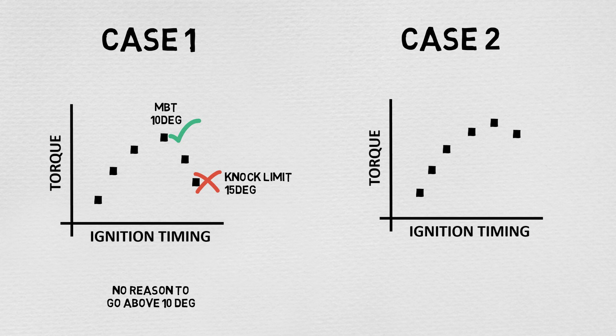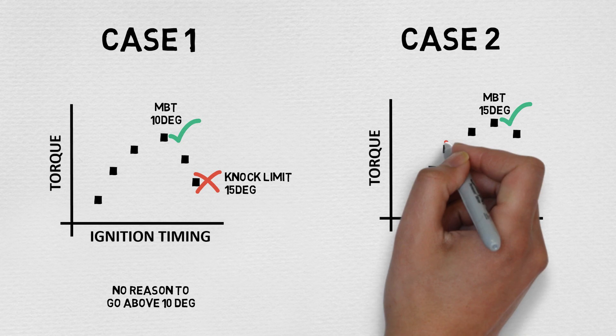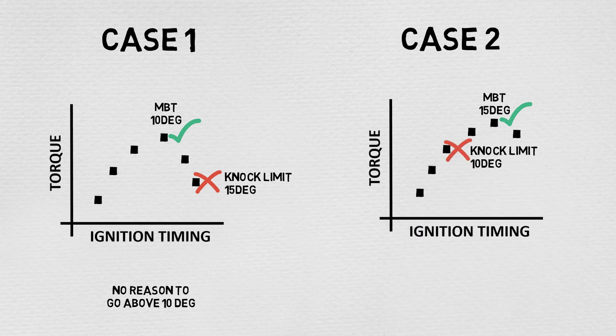On the contrary, let's assume that MBT happens at 15 degrees before top dead center, but knock limit is at 10 degrees. You don't want to damage the engine, so the safe thing is to stay below 10 degrees.